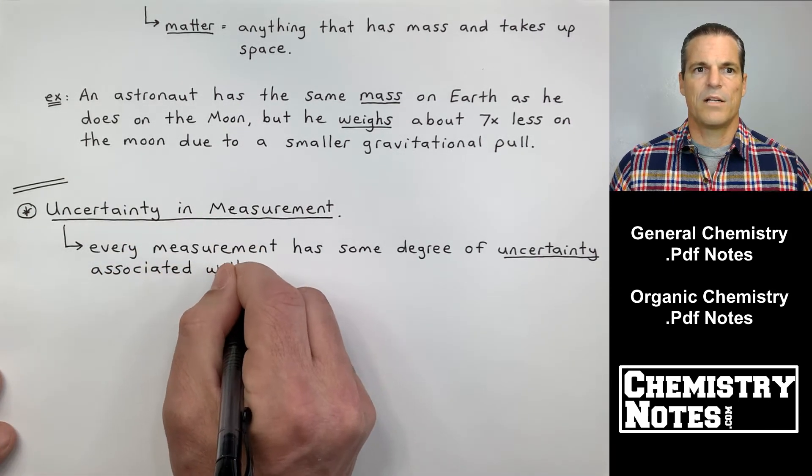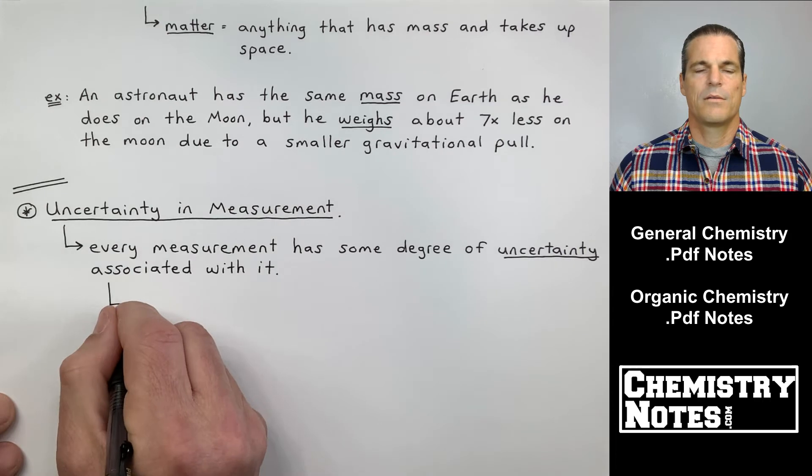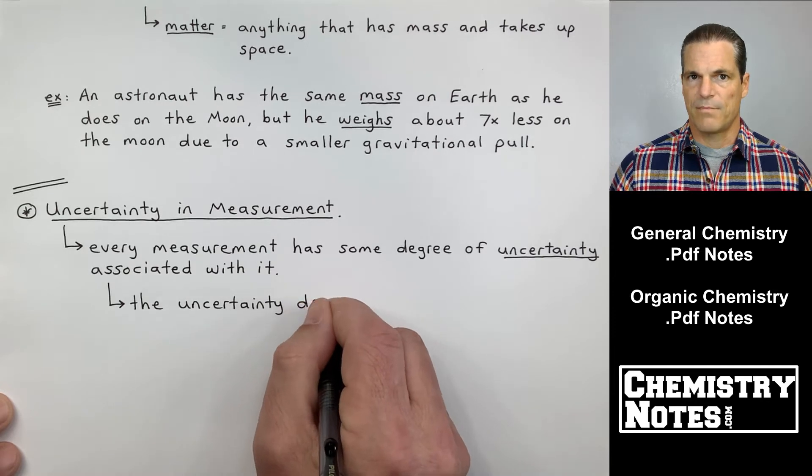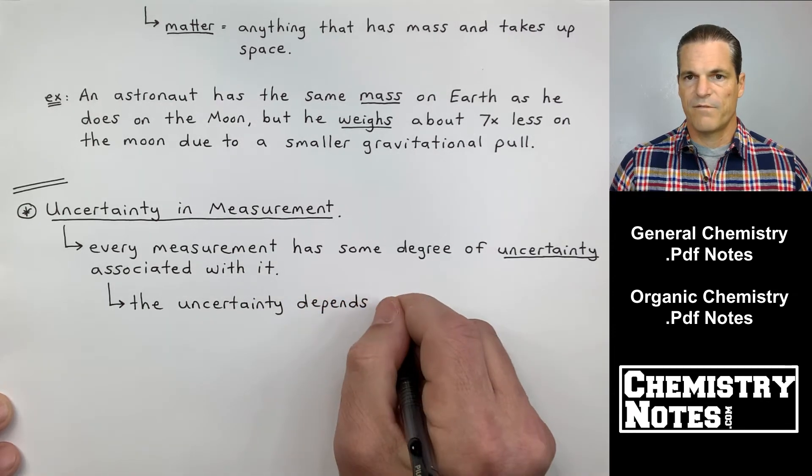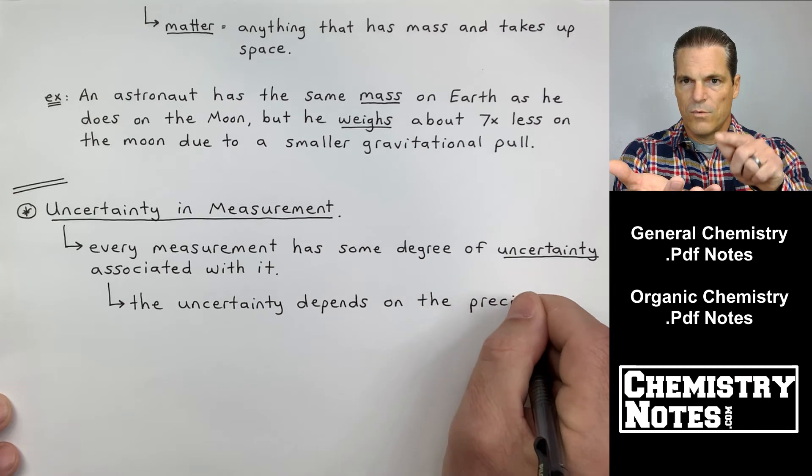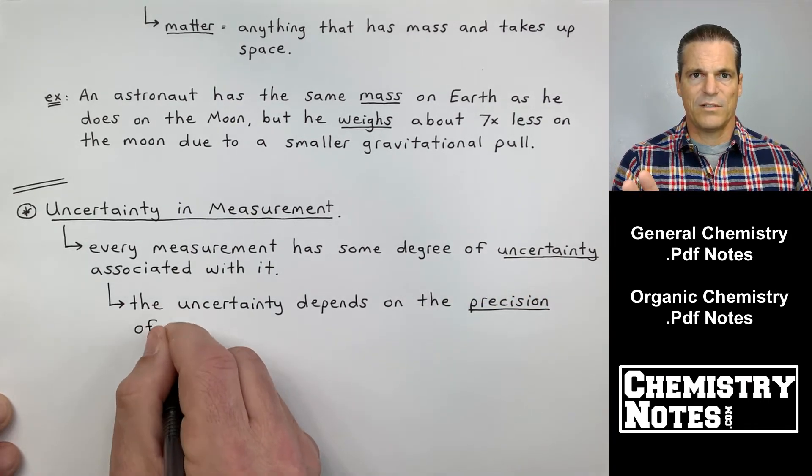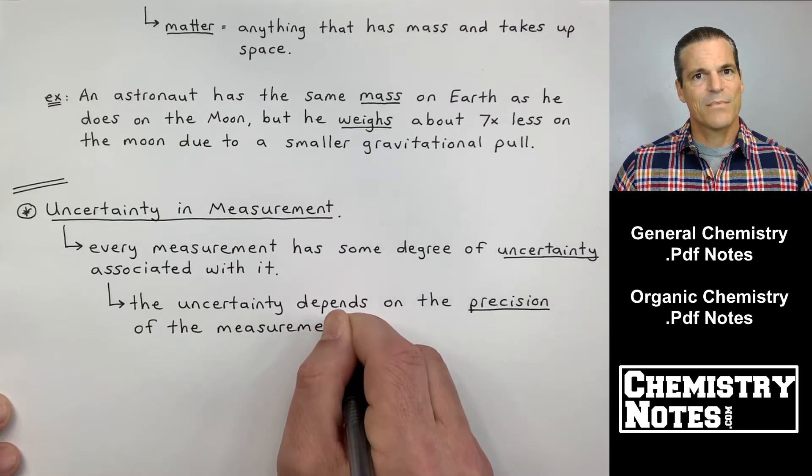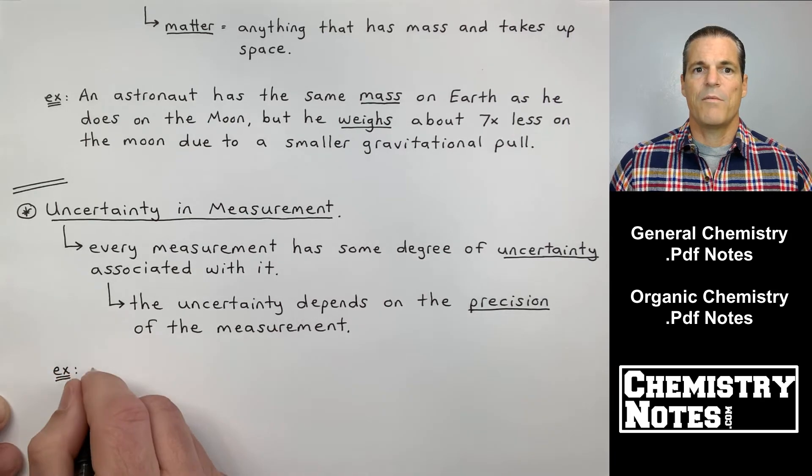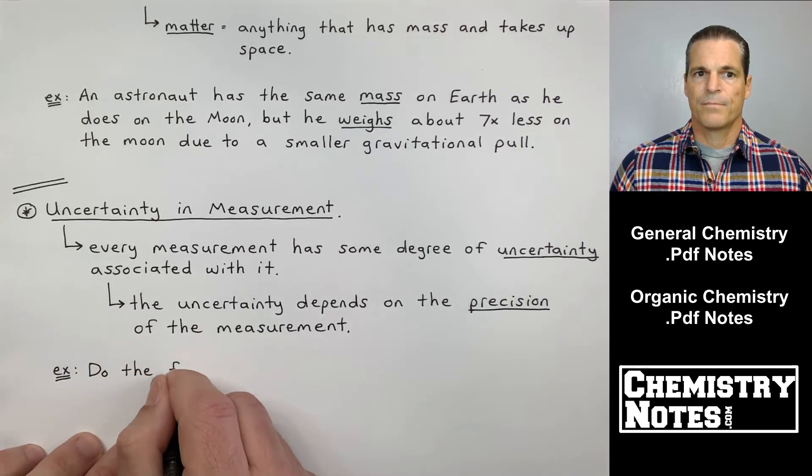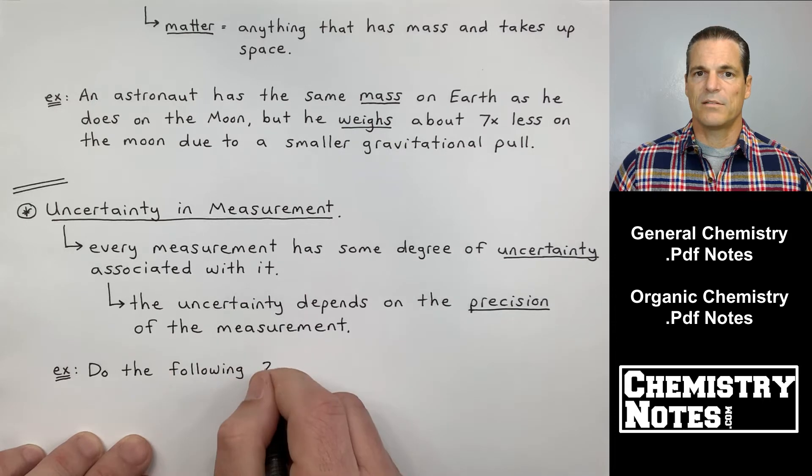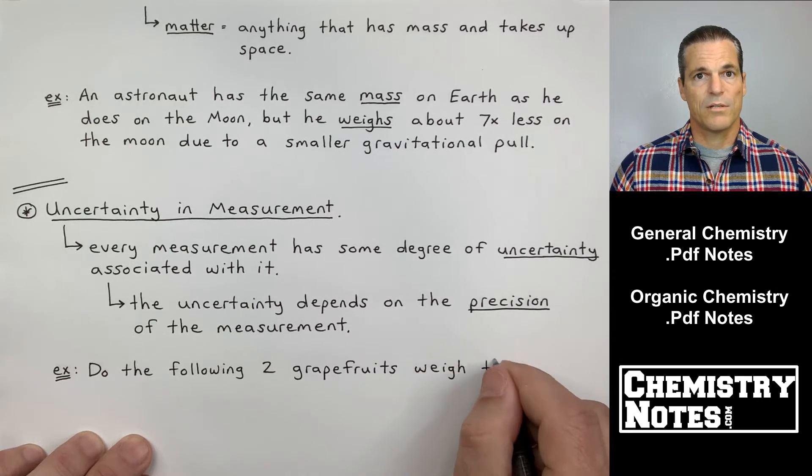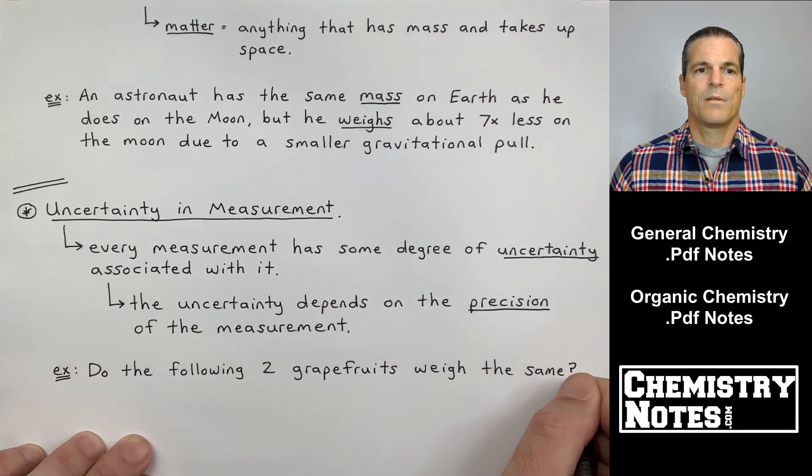Let's get some notes down for uncertainty in measurement. Every measurement has some degree of uncertainty associated with it. I'm measuring something. I'm not counting. If I count five apples in my hands, one, two, three, four, five apples, no uncertainty there. I'm not counting. I'm measuring. Anytime you measure something, there's a little bit of uncertainty involved. Every measurement has some degree of uncertainty associated with it. The uncertainty depends on the precision of the measurement or even the precision of the instrument being used to do the measuring.